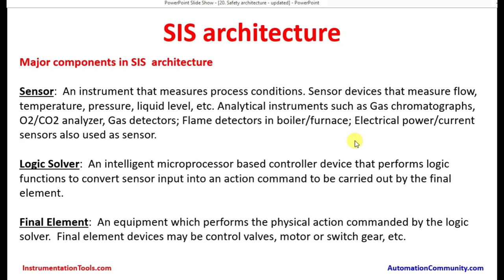Electrical power or current sensors are also used as sensors. These are electrical components sitting in the switchgear and giving the signal about the power or electric current going into the motor, turbine, or other equipment like an extruder. In process industries where many chemicals are being split for different processes, gas chromatographs are used to see the gas composition. These autonomous gas chromatographs are widely used in refineries as well as in petrochemical plants.